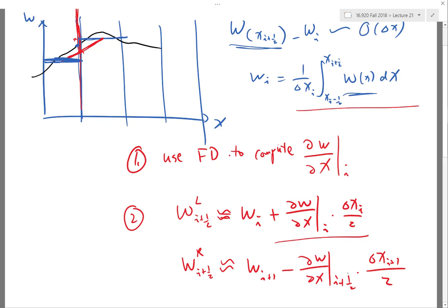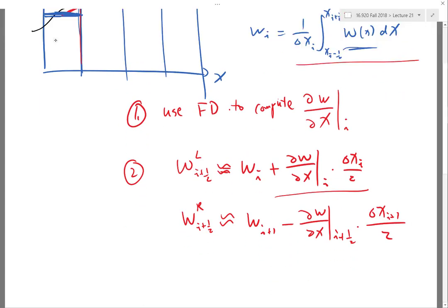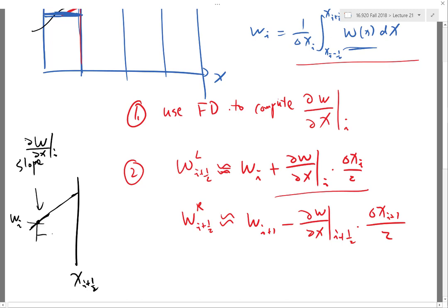So basically the idea is I have a cell at X_i+1/2. If I know the value on the left is W_i and the slope is the X derivative at i, then the left value here is basically delta X_i over two. I'm looking at the tangent times the X spacing to get the Y spacing. So this value here is my W_i+1/2 left.